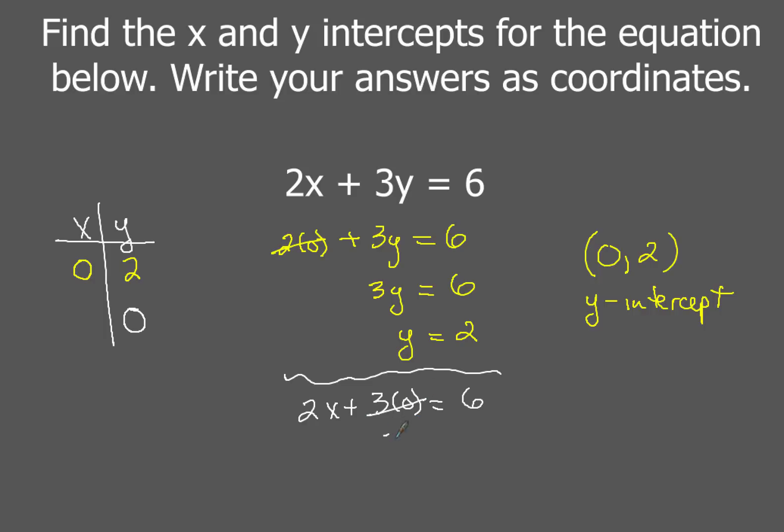So we're going to have two x plus three times zero equals six and of course three times zero that term is gone so you're going to have just two x equals six so then you get x equals three. Now when you write that as a coordinate don't forget the three is going to come first because that's the x value and then zero is going to come second.